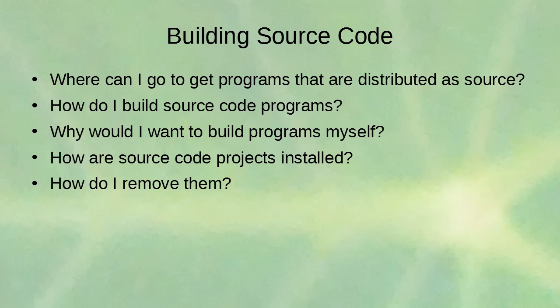Building source code can be tricky because you may have all kinds of libraries that need to be compiled and built in. You need the right compiler, all the dependencies, and sometimes you run configure scripts that check your system — hardware and packages — to customize your build. Then there are makefiles; you run the make command and it builds everything according to the makefile instructions.